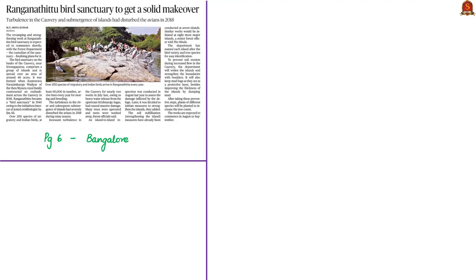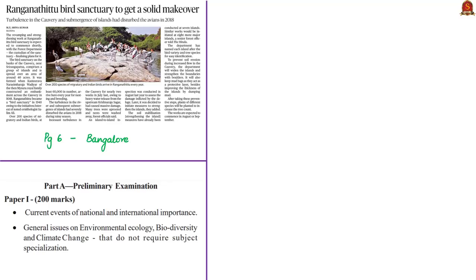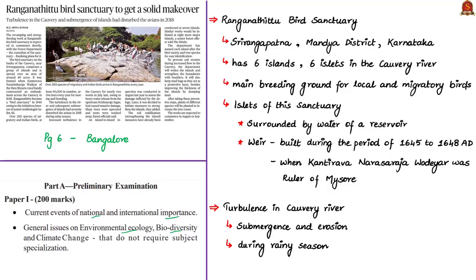The final news article is about the Ranganathittu Bird Sanctuary, located in Srirangapatna, Mandya district, Karnataka. This will be helpful in prelims preparation under current events and general issues on environmental ecology and biodiversity. The sanctuary has six islands and six islets in the Kaveri River, which are the main breeding ground for local and migratory birds. Over 200 species of migratory and Indian native birds arrive here every year for nesting and breeding. Dr. Salim Ali, a famous Indian ornithologist, carried out bird surveys here.